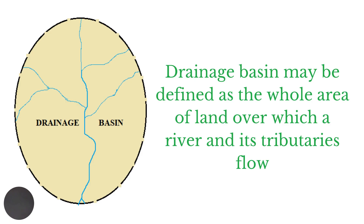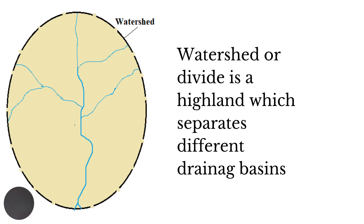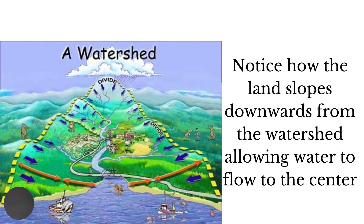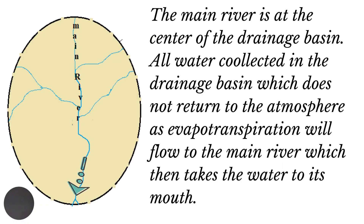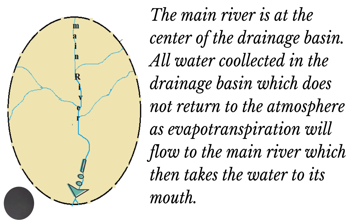The drainage basin may be defined as the whole area of land over which a river and its tributaries flow. The watershed or divide is the highland which separates different drainage basins. Notice how the land slopes downwards from the watershed, allowing water to flow towards the center. At the center of the drainage basin we usually find the main river, so all water collected in the drainage basin which does not return to the atmosphere as evapotranspiration will eventually make its way to the main river.